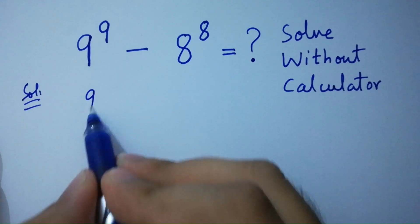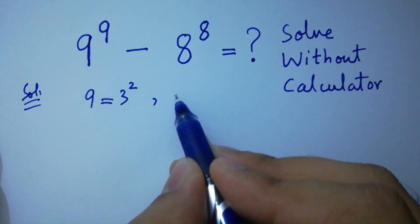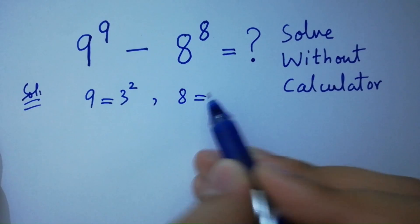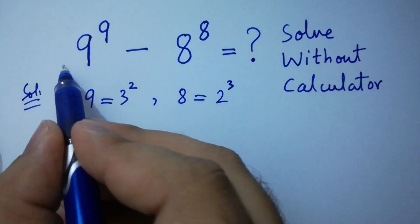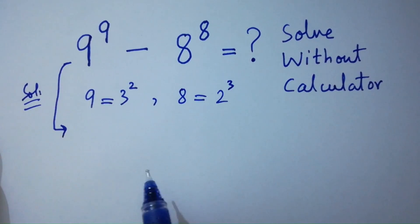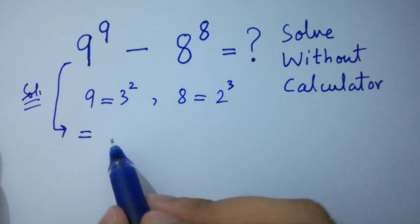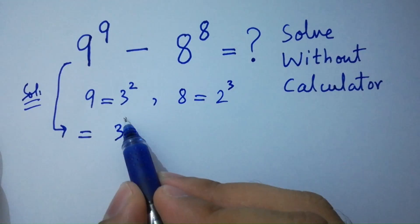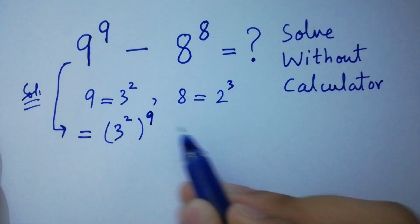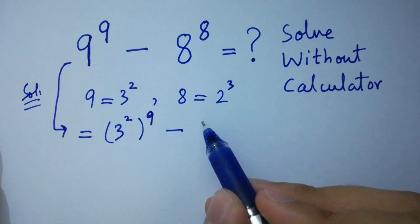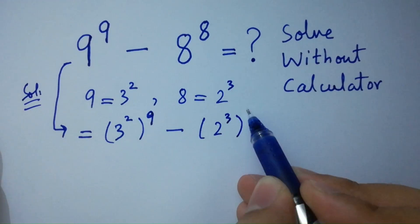Since 9 equals 3 squared — 3 times 3 is 9 — and 8 equals 2 cubed — 2 times 2 is 4, 4 times 2 is 8 — then it will be (3 squared) to the power 9, minus (2 cubed) to the power 8.